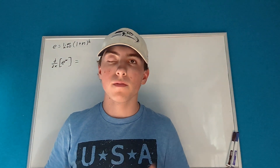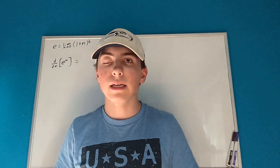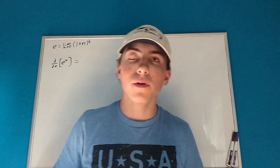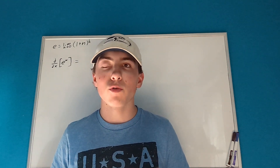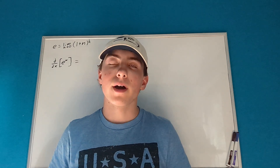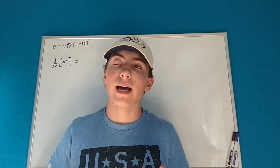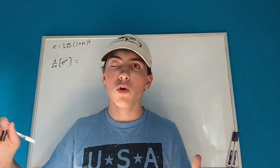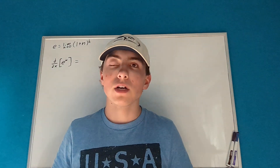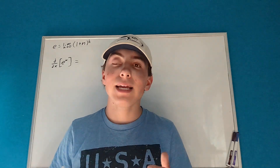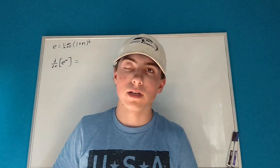Today I want to prove that the derivative of e to the x is equal to e to the x. Before I begin proving that, let's talk about what that actually means. If I have the graph of e to the x and I find the point that has the height of 4, the slope of the graph at that point is going to be equal to 4. So the height of the graph is equal to the slope at that point.